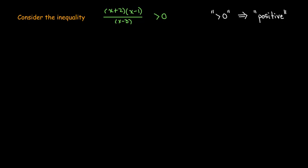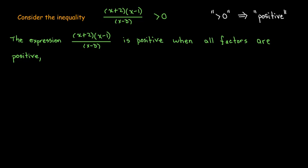This expression has three factors connected by multiplication and division. To get three numbers — two multiplied together and then divided by a third — to be a positive number, they could all be positive, or you could have two of the factors be negative and the other one positive. Either a negative divided by a negative or a negative times a negative gives a positive. So, really there are four cases to consider.